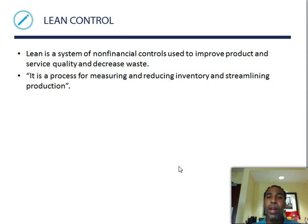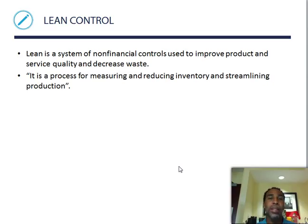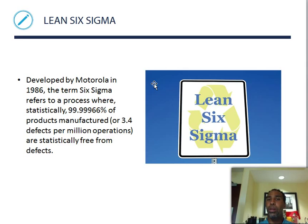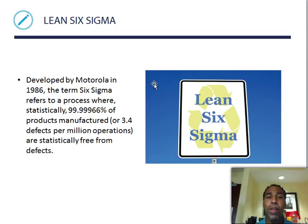Lean control is a system of non-financial controls used to improve product and service quality and decrease waste. When a company can't increase revenue, it can save money instead — saving $20,000 on $100,000 in expenses is effectively the same as earning $120,000. Lean is a process for measuring and reducing inventory and streamlining production. The biggest example is Lean Six Sigma, which helps eliminate waste in any process or project.